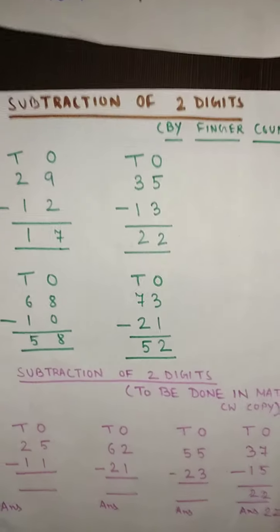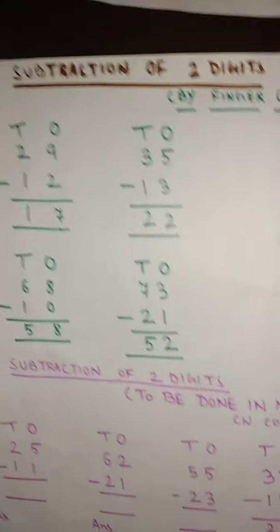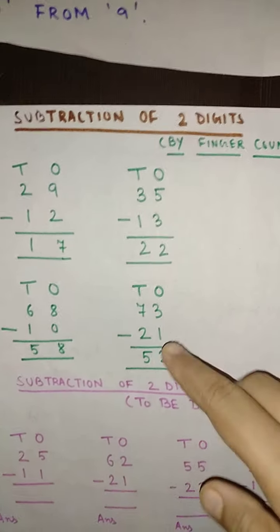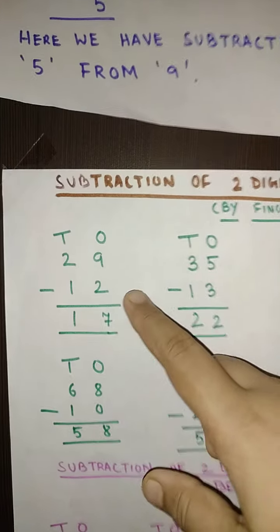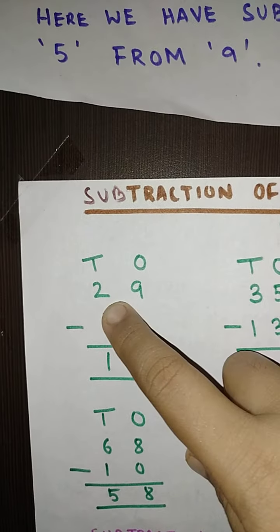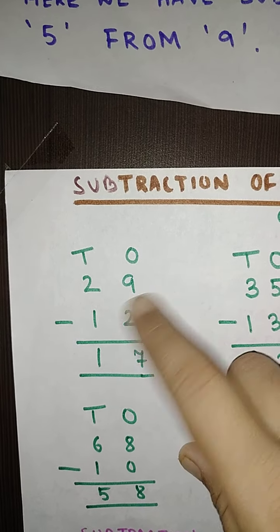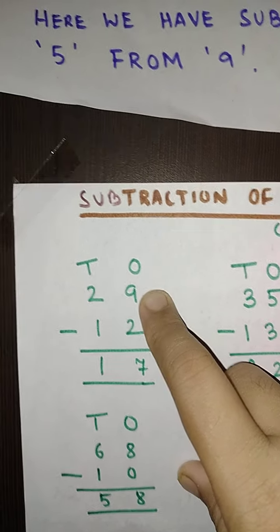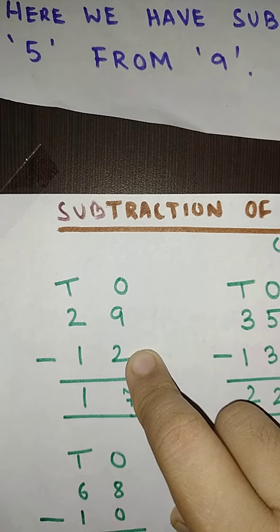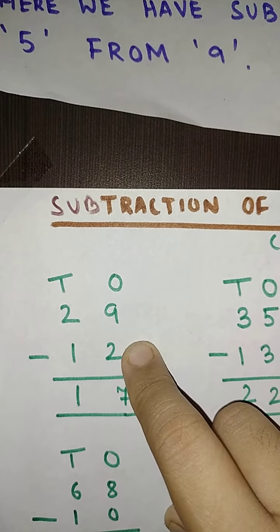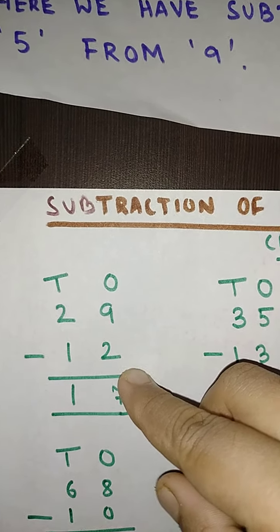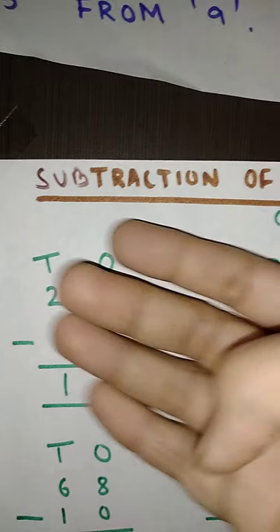Now next we move on to the subtraction of 2 digits number and I hope by this time you have learned how to do the finger counting. So we are going to learn this subtraction with the help of finger counting. Now you can see that here my number is 29 and the lower number is 12. So my upper number here is 9 and the lower number is 2. So I will start my counting right after the next number of 2. So what is the next immediate number of 2? That is my 3.